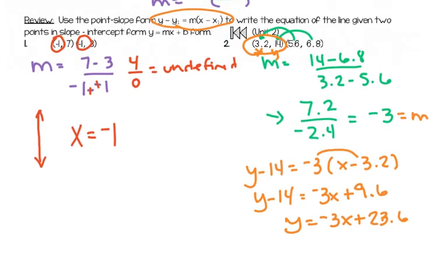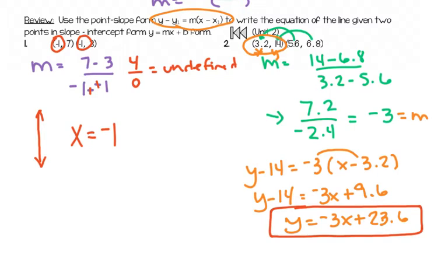In this unit, we're going to see some things a little different than what we've seen before. I've always said that your slope is a ratio — it's rise over run. However, there are a couple of situations where it's appropriate to have a decimal for a slope. So just review point-slope formula.